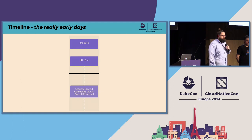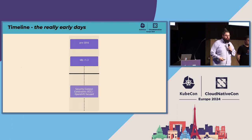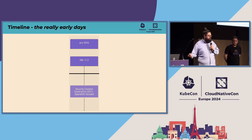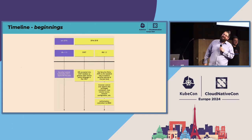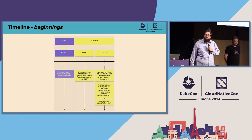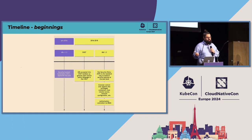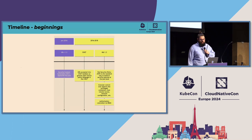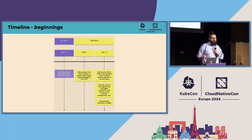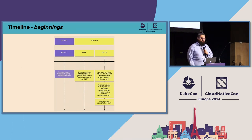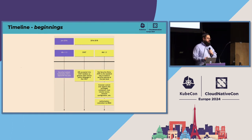Going all the way back to Kubernetes 1.3, we had security context constraints — these are a thing in OpenShift. Then from 2016 to 2018 a few things started happening: OPA was the first policy engine accepted into the CNCF sandbox category, and PSP was introduced and became kind of the standard for a long time. PSP gave us granular control over lots of different settings in the pod and we were able to control it via RBAC. It was rather powerful but difficult to use.